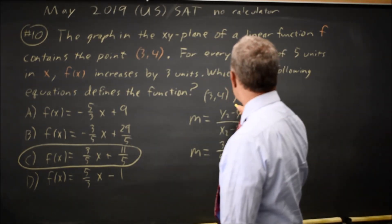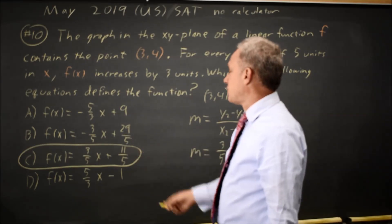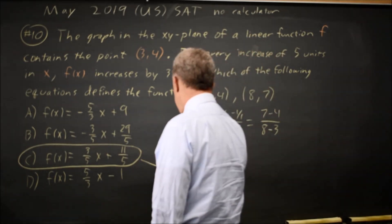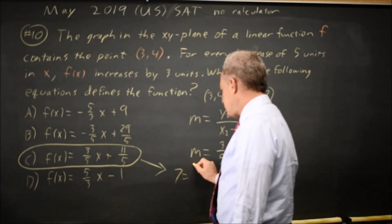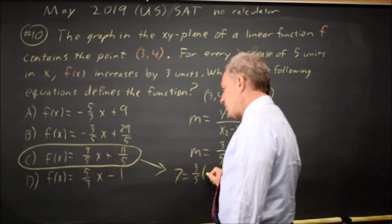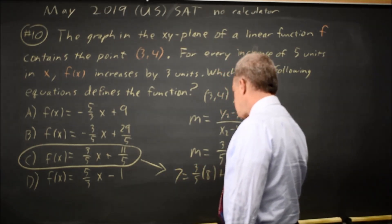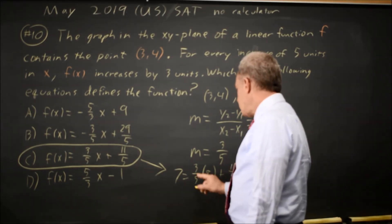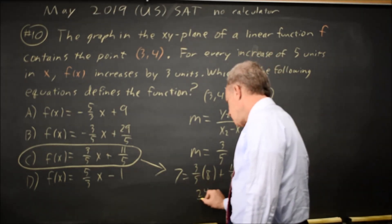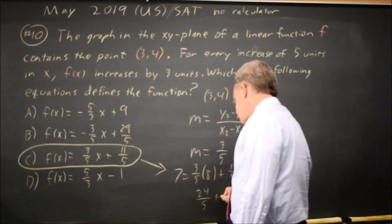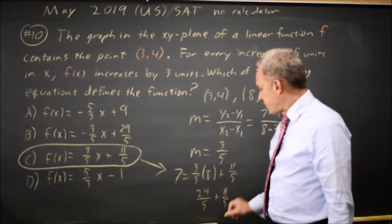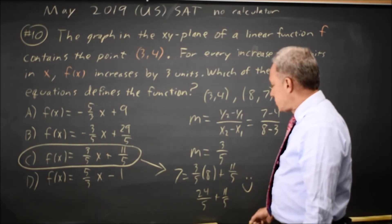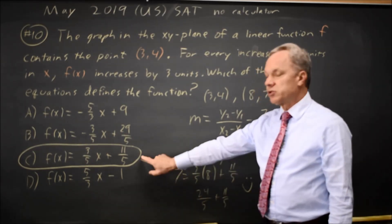I could check that the point (8, 7) satisfies this, and I might as well, although on the actual SAT I wouldn't take that much time. 7 equals 3 fifths of 8 plus 11 over 5. 3 times 8 is 24 over 5 plus 11 over 5 is 35 over 5, which is 7. So the second point is on choice C.